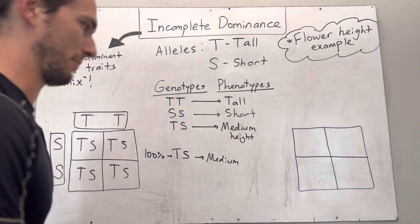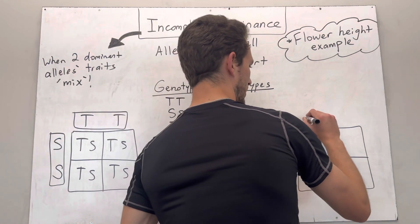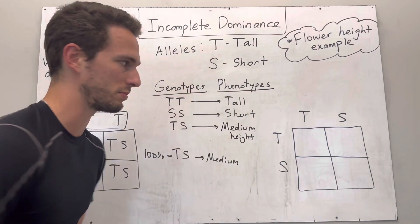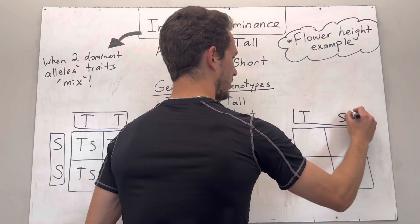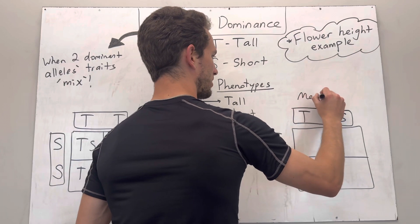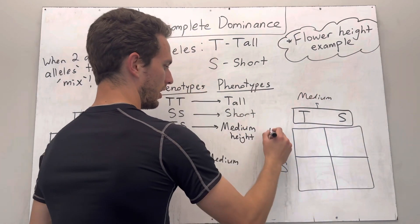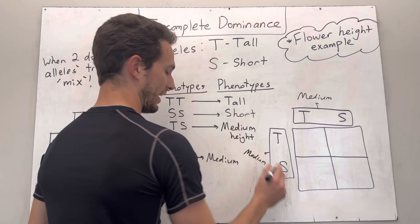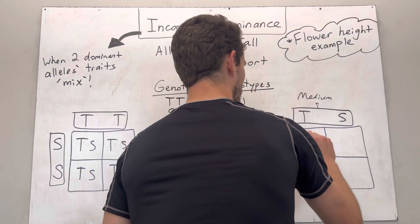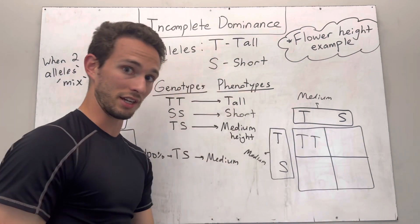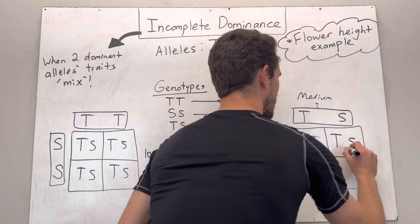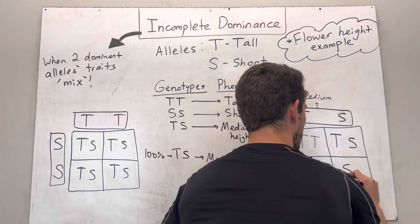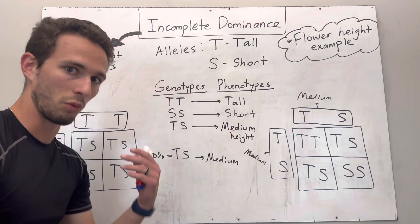Let's do another example and make it a little less simple. Let's say we have a TS and a TS — what would both plants be? Well, obviously this would be a medium height parent, and the second parent is also medium height. So we have two medium height plants crossing together. What are the possibilities? Well, we could have big T, big T; we could have big T, big S on a couple; and we could also have big S, big S.